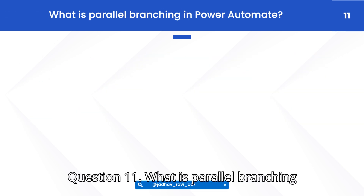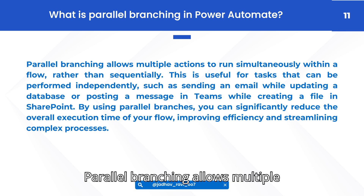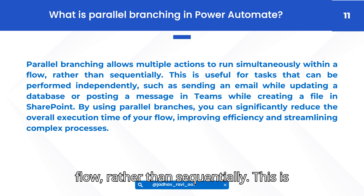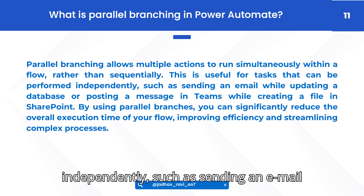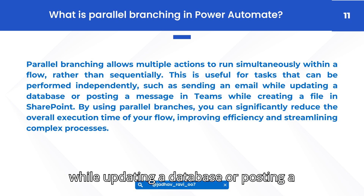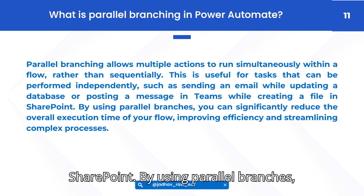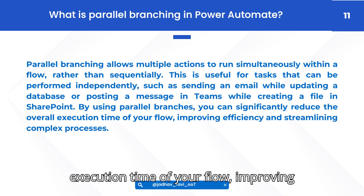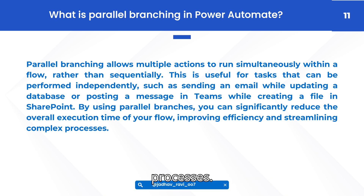Question 11: What is parallel branching in Power Automate? Answer: Parallel branching allows multiple actions to run simultaneously within a flow, rather than sequentially. This is useful for tasks that can be performed independently, such as sending an email while updating a database, or posting a message in Teams while creating a file in SharePoint. By using parallel branches, you can significantly reduce the overall execution time of your flow, improving efficiency and streamlining complex processes.